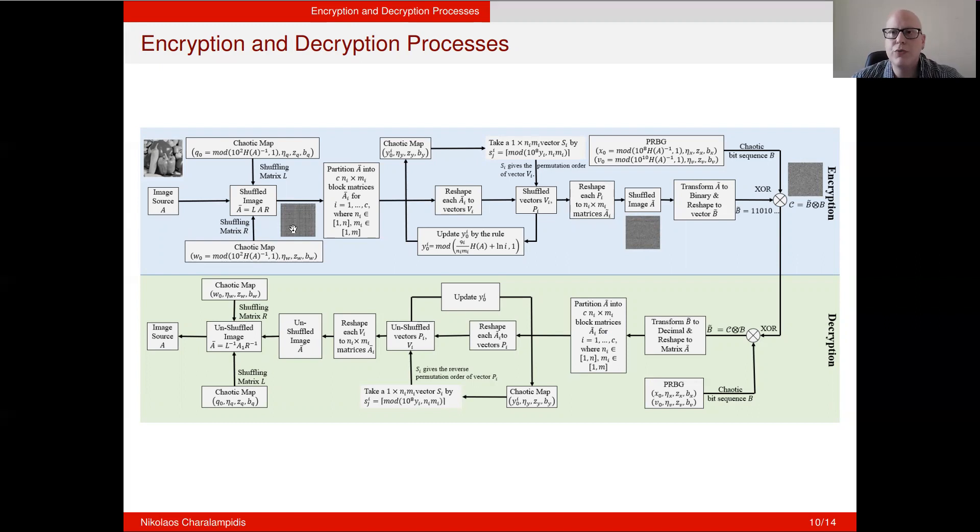Next, in order to move forward to the second step, the first thing we do is we partition A bar into C Ni times Mi block matrices A bar i, which we take this A bar i and we convert them to vectors Vi. In order to shuffle each of these vectors Vi, for example, let's take V1, we take the chaotic map with this initial condition and control parameters, and we construct a vector Si, which is S1, which gives the permutational order of the vector V1. Once we shuffle the vector V1 and we obtain P1, then we update the initial condition through this rule, and we do the same thing for the V2 vector V3, etc., until no unshuffled vectors Vi remain.